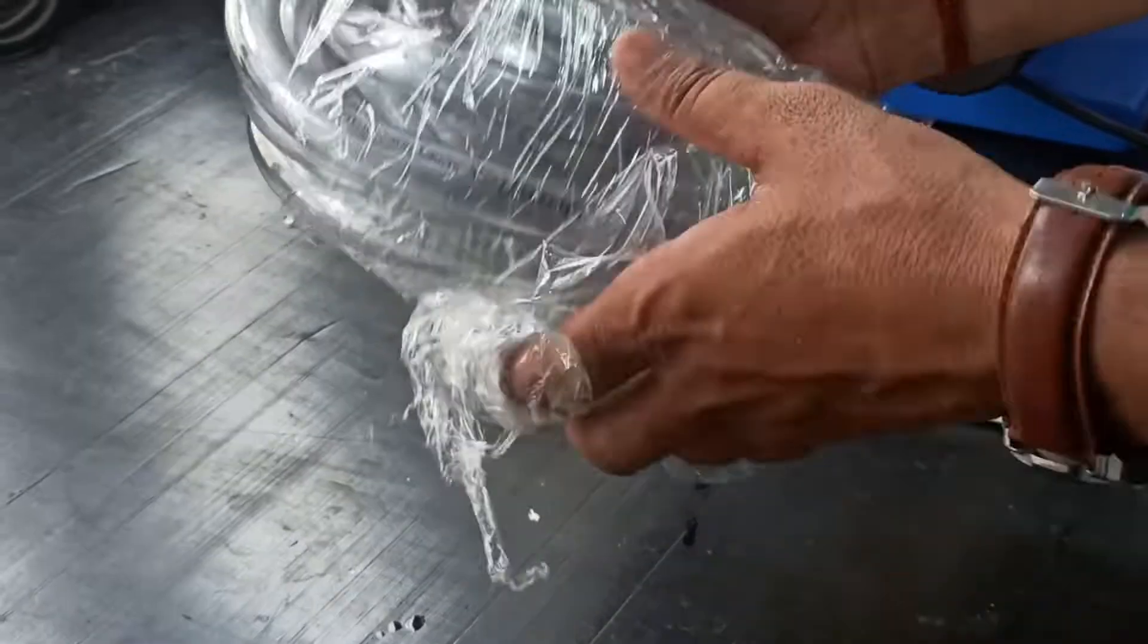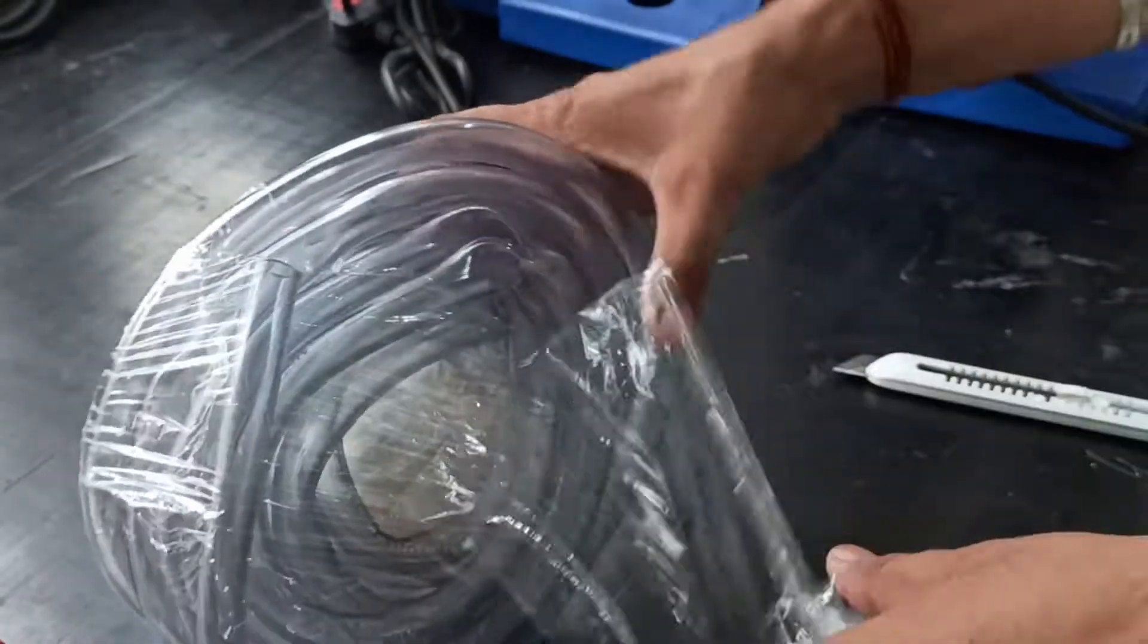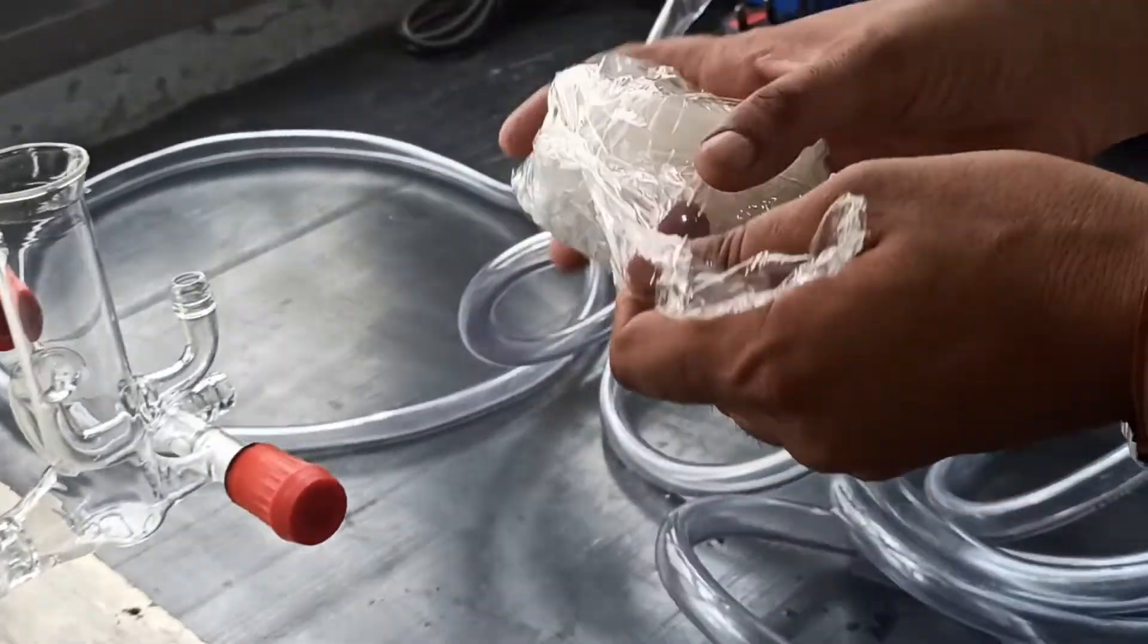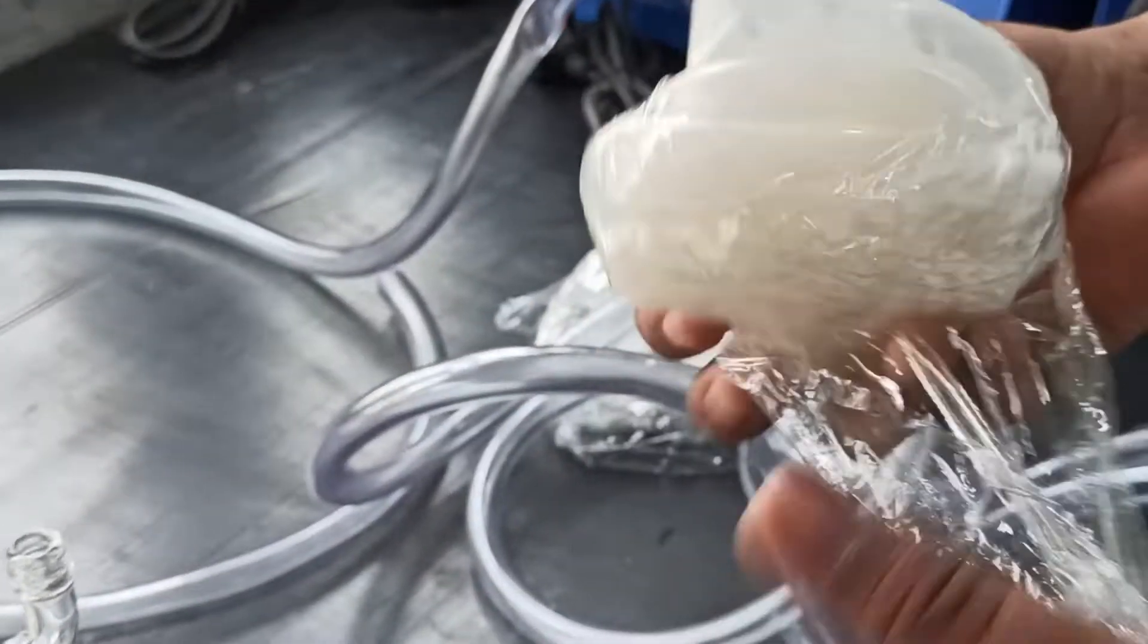You will get two types of pipes inside the packing boxes. One is transparent pipe and the second one is white pipe for distilled water output.